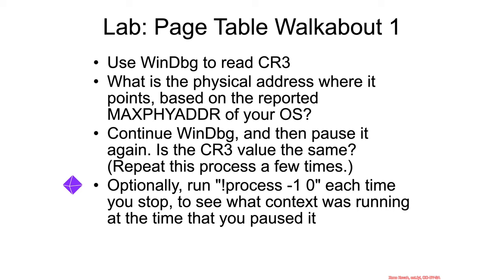I want you to do a quick lab. Go into WinDbg and read the CR3 value — just break in and read it. Based on that, and based on the max physical address you saw before, and looking back at the interpretation of CR3 according to the slides and the manual, what is the physical address where the page map level 4 is?